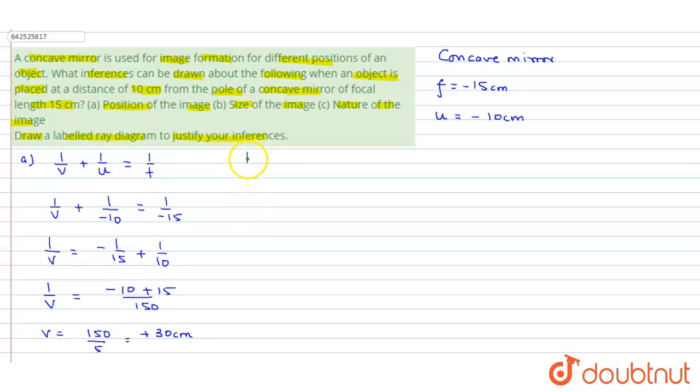Now, comes about the size of the image. First of all, let us calculate the magnification. Magnification is minus of v by u.